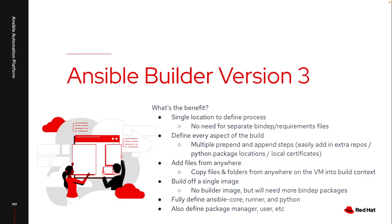One of the other limitations in the past was that any files I wanted to add into the container file had to be in that context folder. Now, you have the ability to add at runtime from any location on that virtual machine. So if I do want to add in certificates that live locally, I can pull them directly from their location into that build context and add them into the execution environment during the build process. I don't have to worry about maintaining them up to date — as long as they're up to date on the virtual machine, they'll be up to date inside the execution environment.